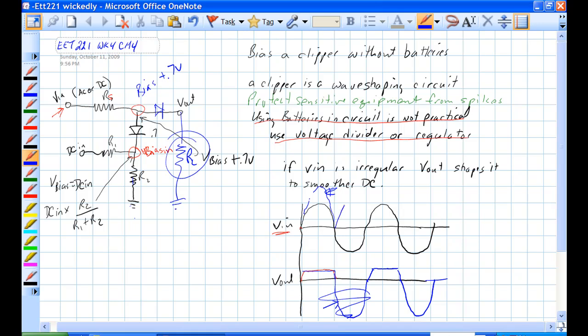If the input waveform is like this, then you will get a waveform that looks like this, just bias plus 0.7 volts.